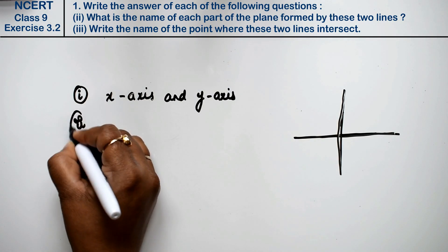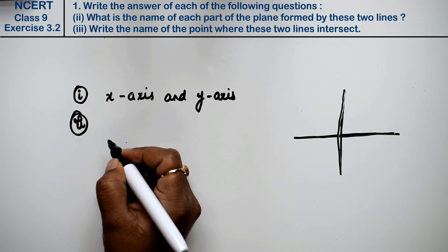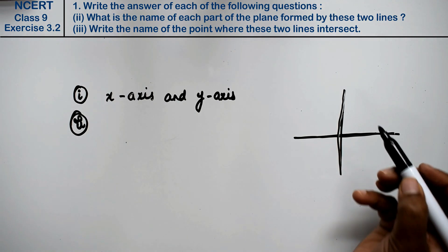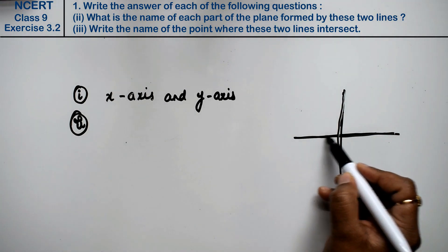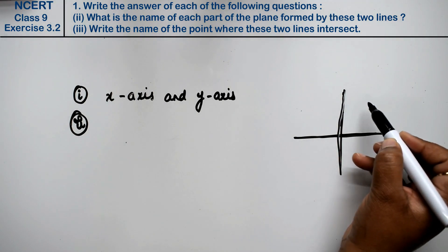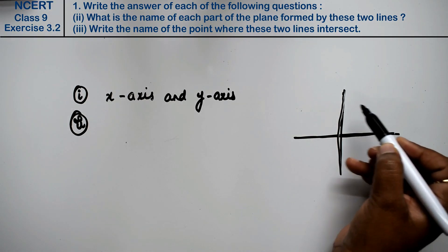Let's do second part. Second part is saying, what is the name of each part of the plane formed by these two lines? Friends, the parts formed by these two lines, what are they called?